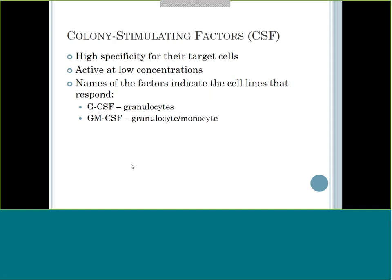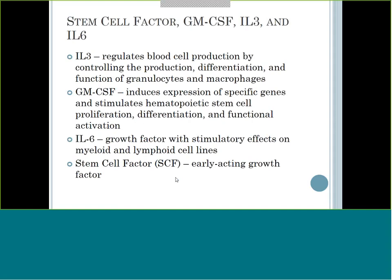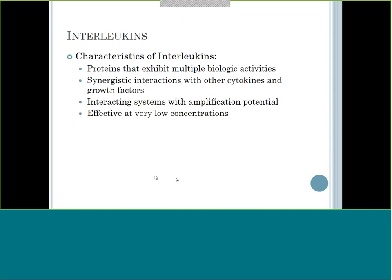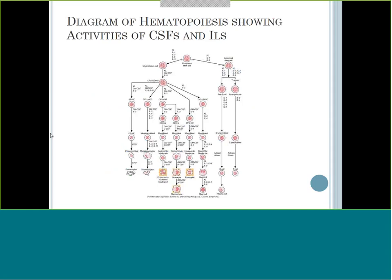Colony stimulating factors are really targeting the granulocytes and monocyte lines. Interleukins - the word 'leuk' means white blood cells, and they do a lot with different white blood cells. When you look at the more thorough hematopoiesis chart, you'll see all these little things in between each stage of cells - those are all the growth factors necessary to keep that cell line moving along. It's a lot more complex when you look at it this way.